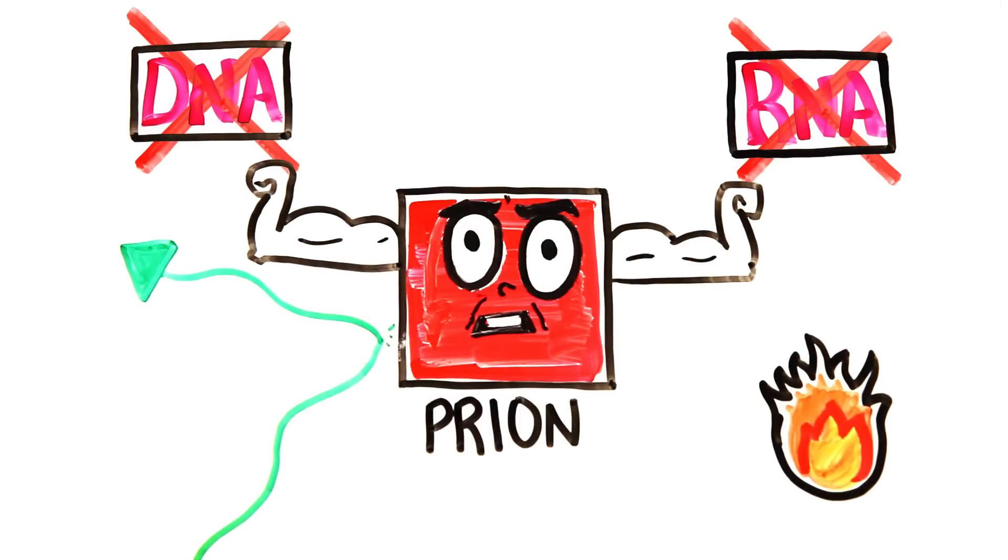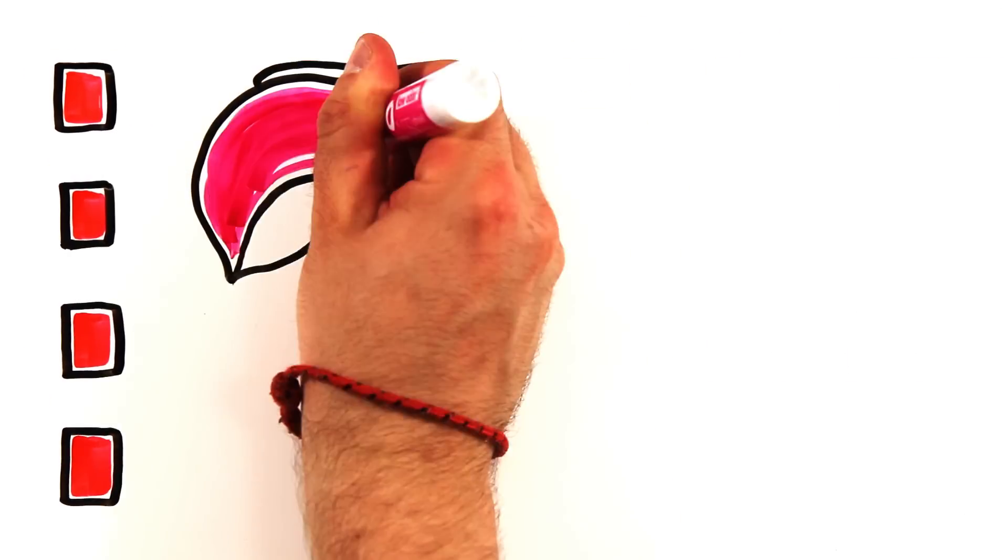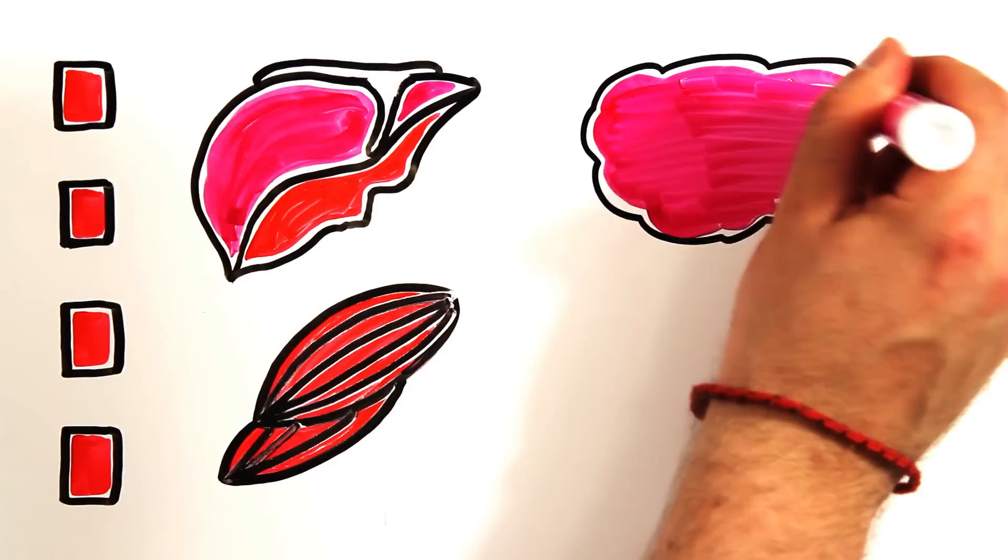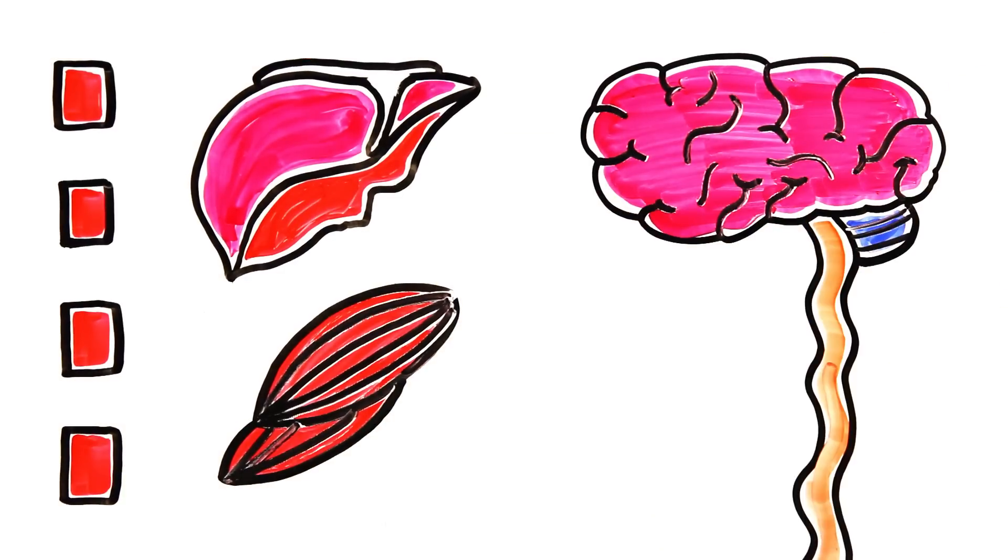These incredibly infectious prions could be present in any nervous tissue, including organs and muscles, but are most common in the brain and spinal nerve tissues, meaning if you happen to consume meat with prions in it, your risk of infection is high.